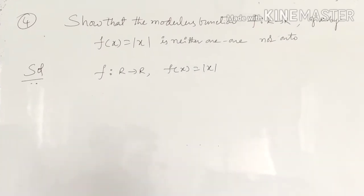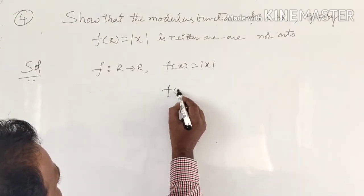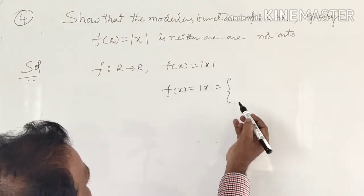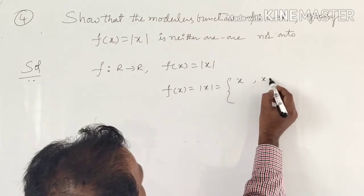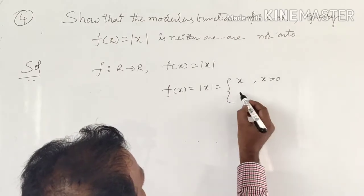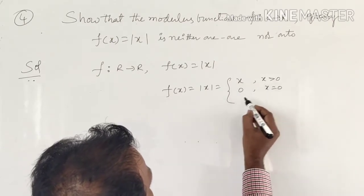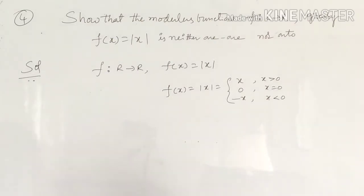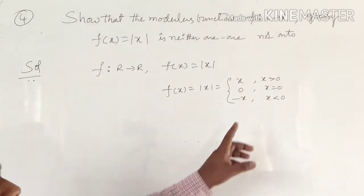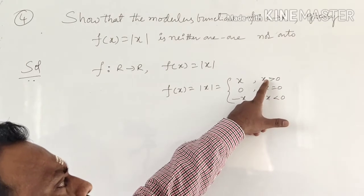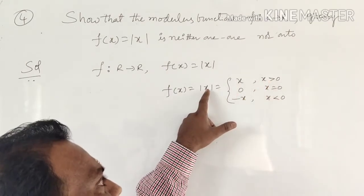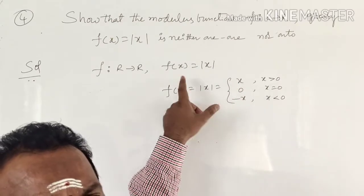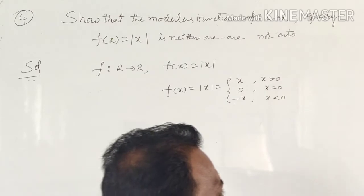The definition of the modulus function: f(x) = |x| is defined as plus x when x is greater than zero, zero when x is equal to zero, and minus x when x is less than zero. So if you substitute x values greater than zero, f(x) gives plus x; if x is less than zero, f(x) gives minus x.